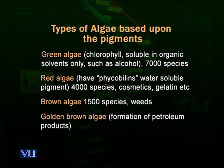Algae are very important because they reduce the greenhouse effect. No matter which environment they are present in, they utilize carbon dioxide and convert it into carbohydrates as their own food — thereby reducing carbon dioxide from the environment. Secondly, when they carry out photosynthesis, just like plants, they release oxygen into the environment, which is necessary for animals and other organisms for their respiration and life processes.